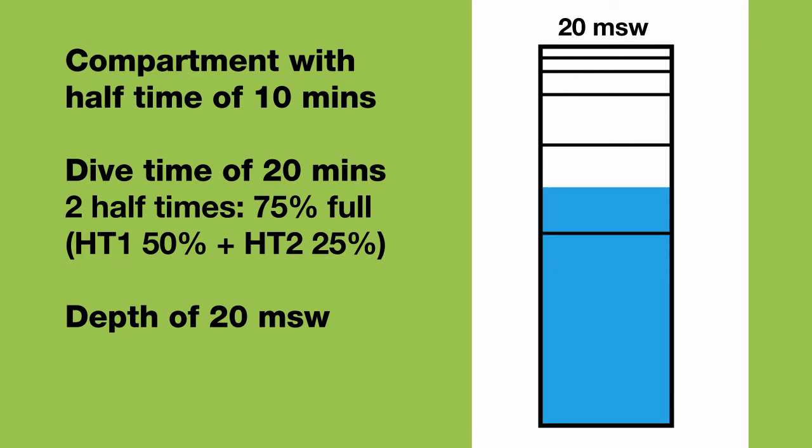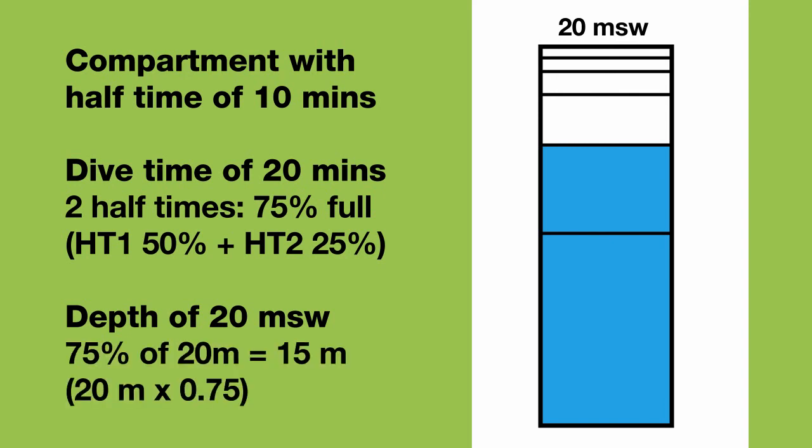And after 2 half times, a compartment is 75% full. The first half time was 50%, and the second half time was 25%, so 75% in total. 75% of 20 meters is 15 meters. 20 meters times 0.75 is 15. Therefore, the compartment has 15 meters of seawater nitrogen pressure.